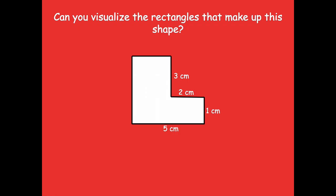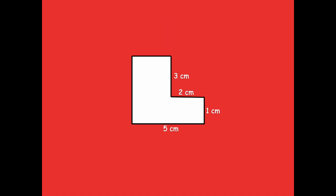Here's what I came up with. I could draw a line here — so we could have a tall rectangle and then a shorter one on the side. Or you could draw a line here as well. Those are both ways that you could have split this shape up into visualizing it as two rectangles.